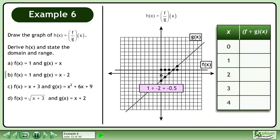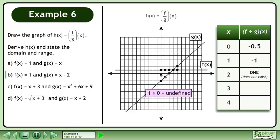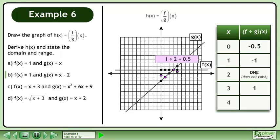Divide the y-values of the first point to get negative 0.5. Divide the y-values of the next point to get negative 1. 1 divided by 0 is undefined, so record does not exist in the table. Divide the y-values of the next point to get 1, and the final point to get 0.5.